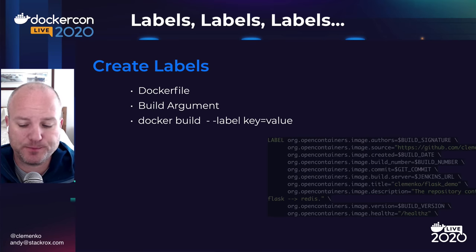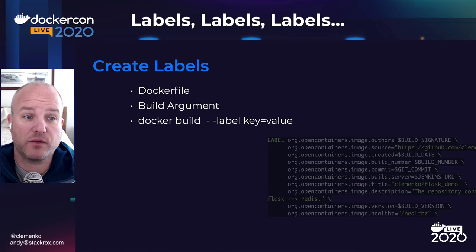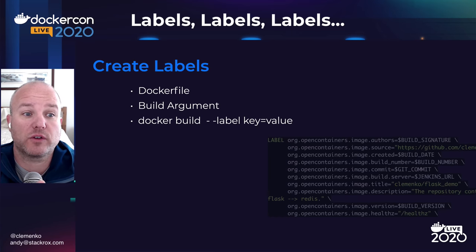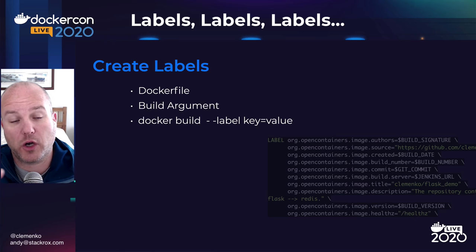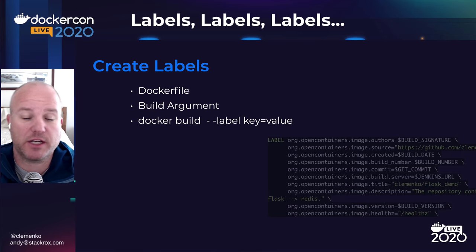So how do we create labels? Creating labels is a function of build time. You can't really add labels to an image after the fact. The way you add labels is either through the Dockerfile, which I'm a big fan of because it's declarative, it's in version control, it's kind of irrefutable — especially if you're tracking that commit number in a label. You can extend it from being a static declaration to something more dynamic with build arguments. Or if you did it by hand, you could do: docker build --label key=value.